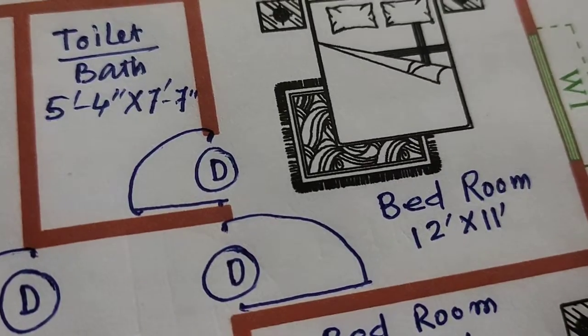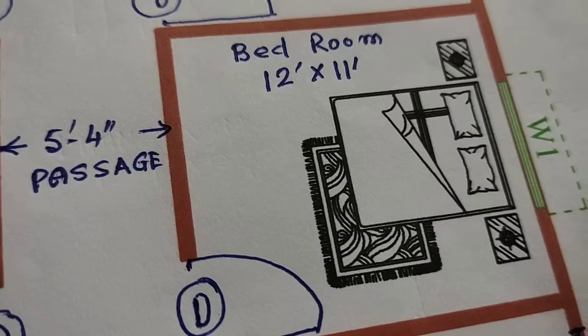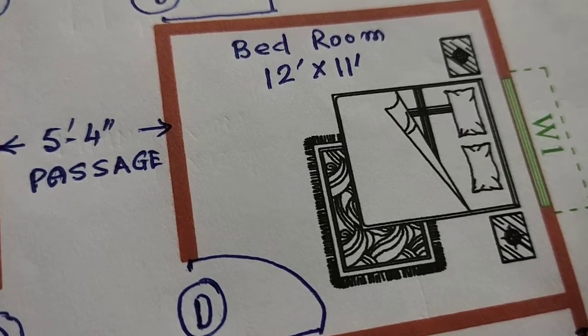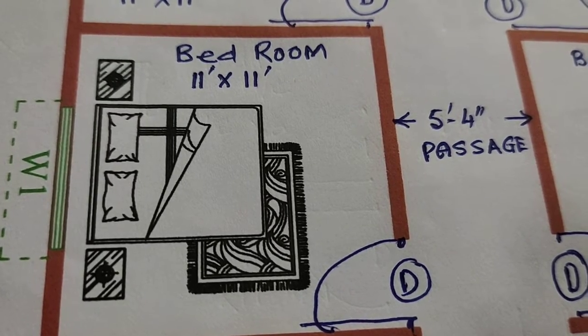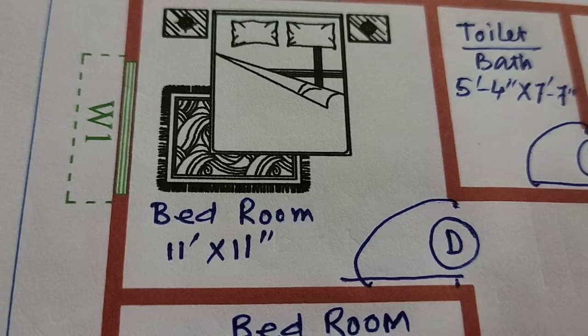With bedroom, 12 feet into 11 feet. Second bedroom, 12 feet into 11 feet. Third bedroom, 11 feet into 11 feet. Fourth bedroom.